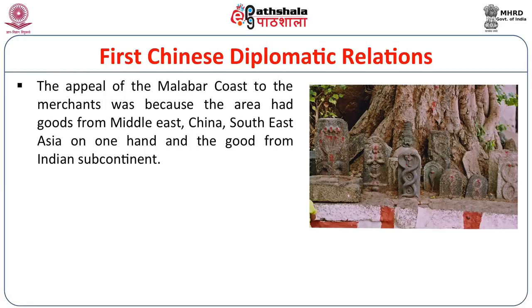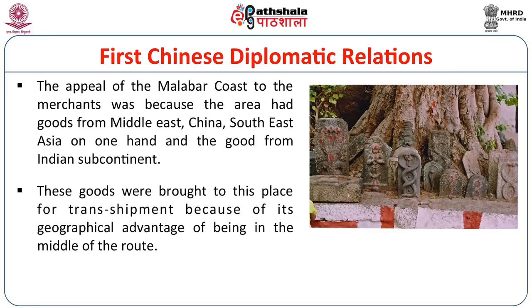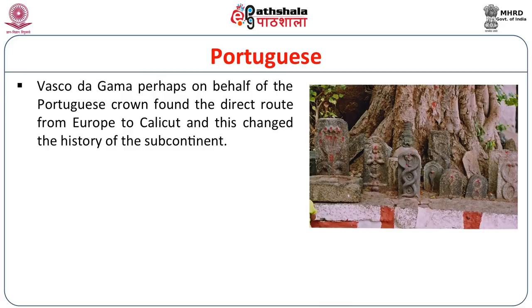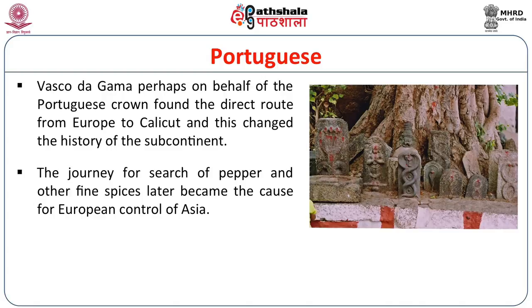The appeal of the Malabar coast to merchants was because the area had goods from the Middle East, China and Southeast Asia on one hand, and goods from the Indian subcontinent on the other. These goods were brought to this place by transshipment because of the geographical advantage of being in the middle of the route. The Portuguese then appeared on this scenario: Vasco da Gama found the direct route from Europe to Calicut, and this changed the history of the subcontinent and Asian overseas trade. The search for pepper and other fine spices later became the cause for European control of Asia.